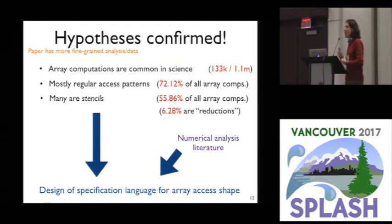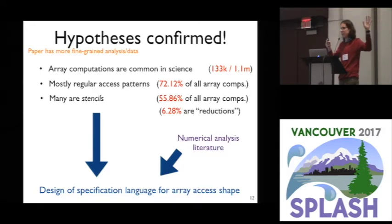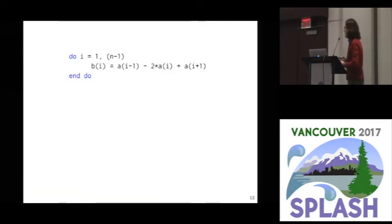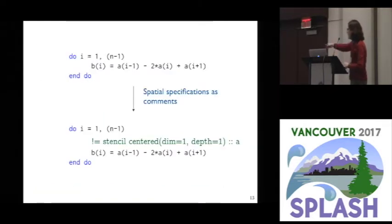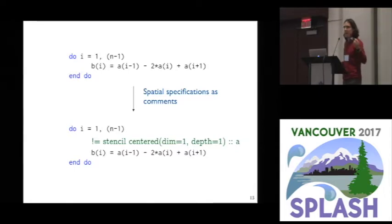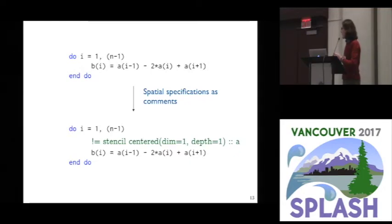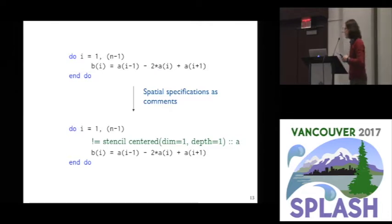We took all the data we collected and designed a specification language for roughly 70% of array computations — these common patterns we were seeing. We were also influenced by some of the numerical analysis literature in terms of terminology, because a lot of these array computations are derived from converting continuous partial differentials into a discrete simulation. As a quick example of one of our specifications: this is a stencil computation, and we can specify that array A is involved in a stencil computation and accessed in a centred way in its first dimension to a depth of one — meaning we use A[i], A[i-1], and A[i+1]. These specifications are inserted as comments into the code.